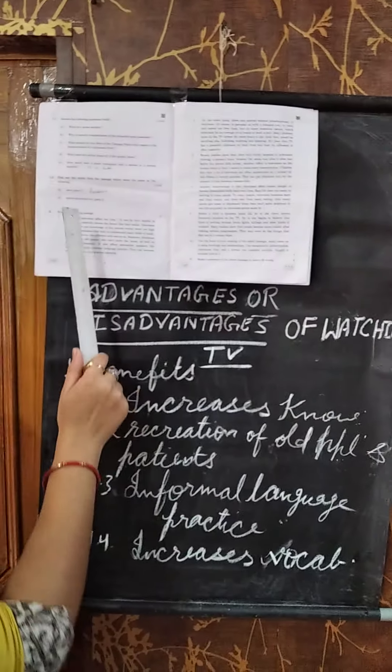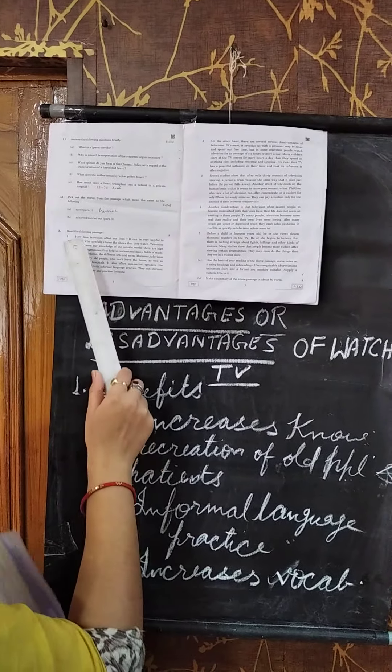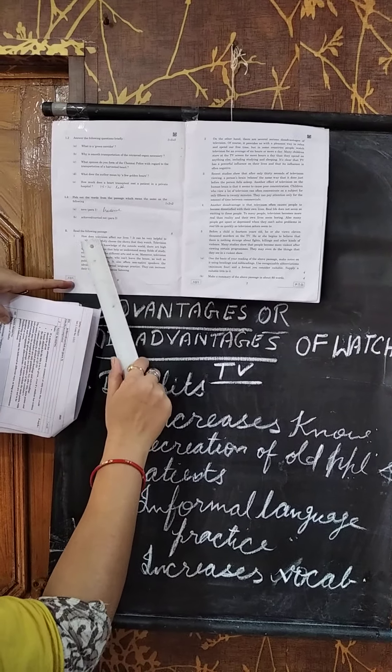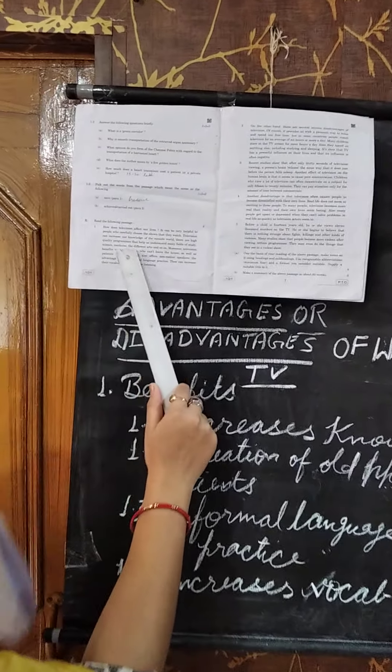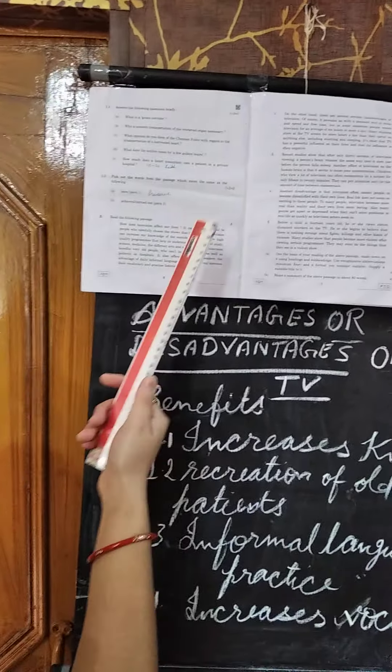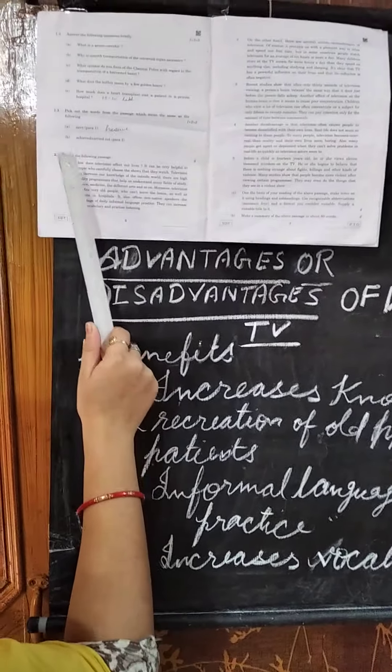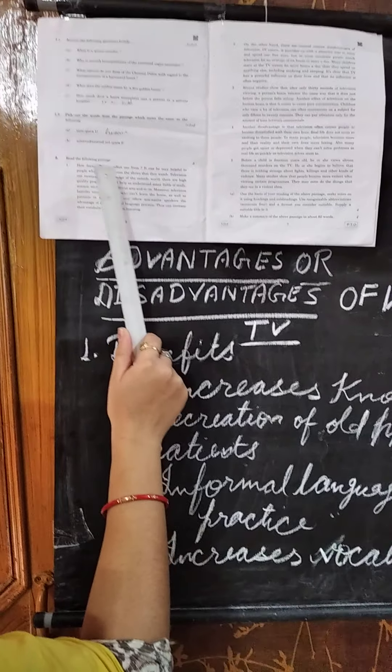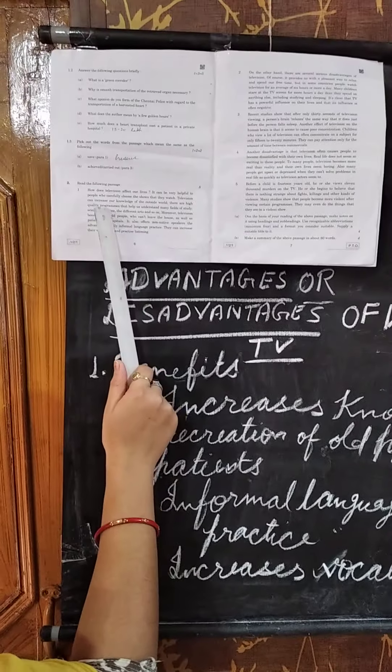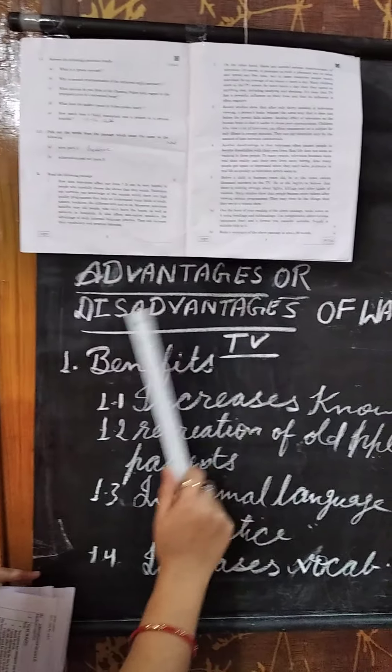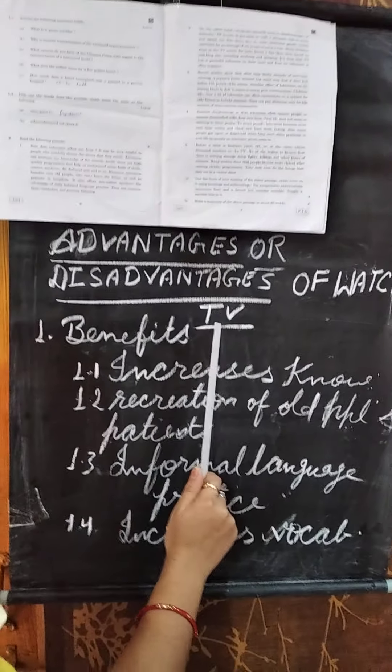So first of all, not wasting your time, let's come to the title. When you read the first paragraph you will come to know about the title. You can write the title like television only or how television affect our lives, or advantages or disadvantages of watching TV.